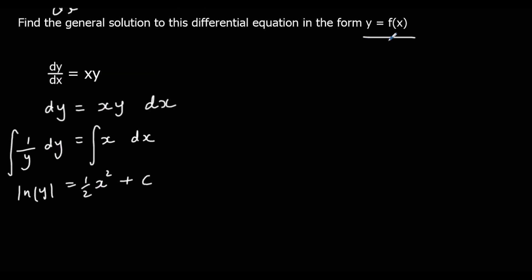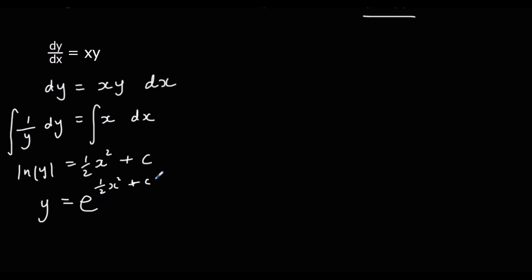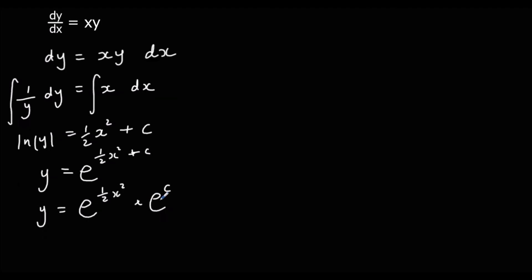We need to get it in the form y = f(x), so to get rid of ln(y) and isolate y, we exponentiate both sides: y = e^(x²/2 + c). We can simplify this by writing it as e^(x²/2) × e^c. Since e^c is just a constant, we rename it a, giving the final answer y = a·e^(x²/2).